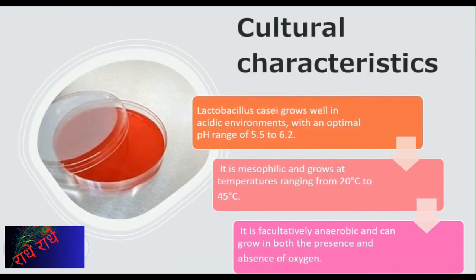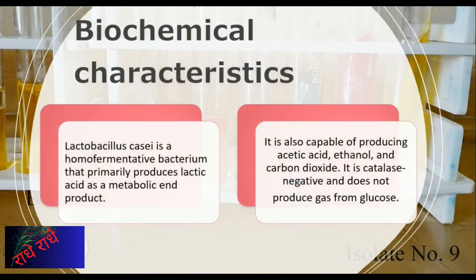Lactobacillus casei is a bacteria strain with an affinity for acidic environments. It is a widely distributed probiotic, found in many fermented foods. It has an optimal pH range of 5.5 to 6.2 and is capable of growing both aerobically and anaerobically, as well as at temperatures between 20 degrees Celsius and 45 degrees Celsius. Lactobacillus casei is an obligate homofermentative bacterium, meaning its energy production is only fueled by one type of sugar, leading to lactic acid being its metabolic end-product. It can also produce acetic acid, ethanol, and carbon dioxide as by-products.